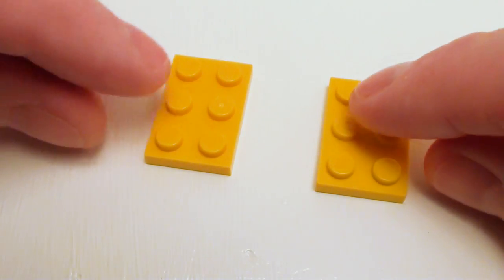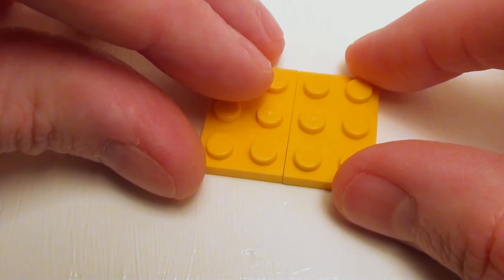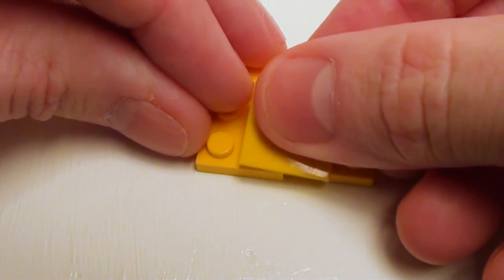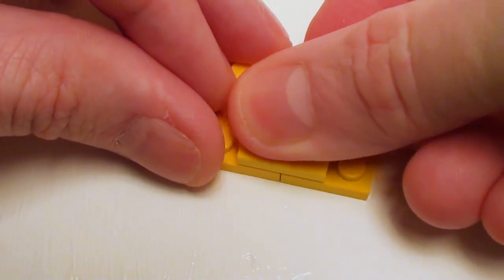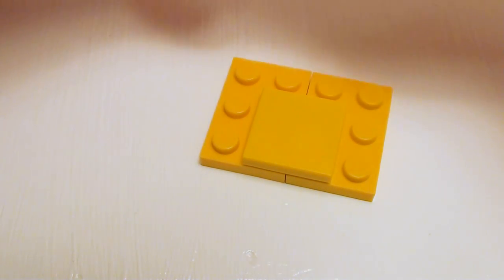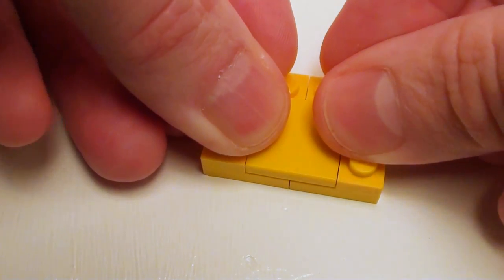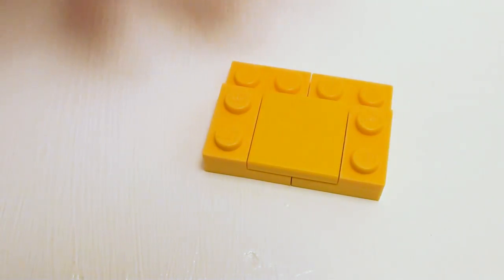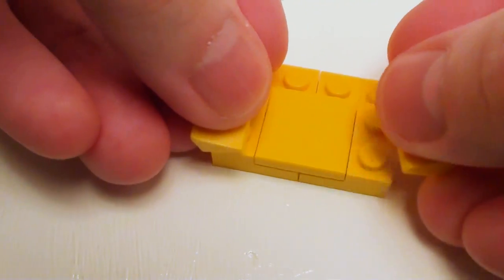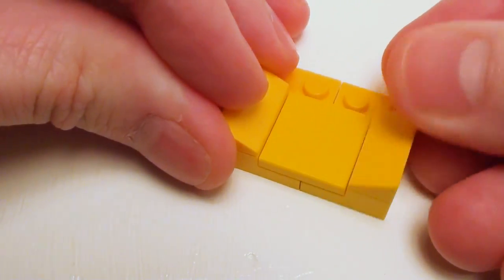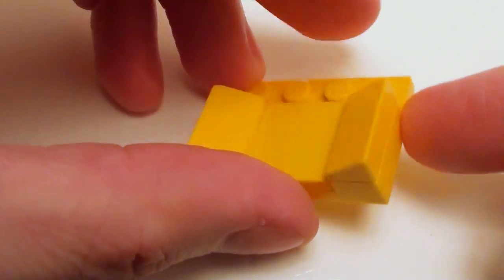For the lower portion of the slide, let's take a set of 2 by 3 plates, set these together, and I'm going to lock them together with a 2 by 2 flat tile. We're going to surround that tile with two 1 by 2 plates and a set of 1 by 2 by 2 thirds slopes. Now let's flip this assembly over.